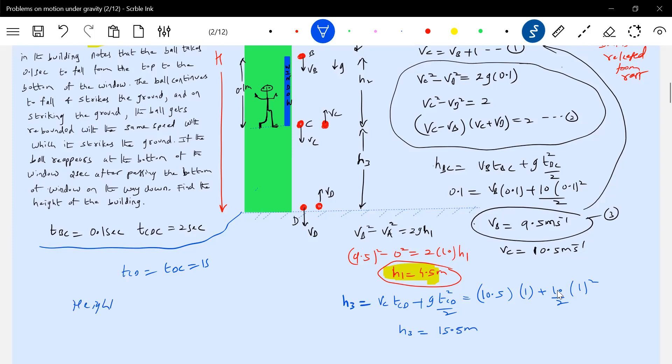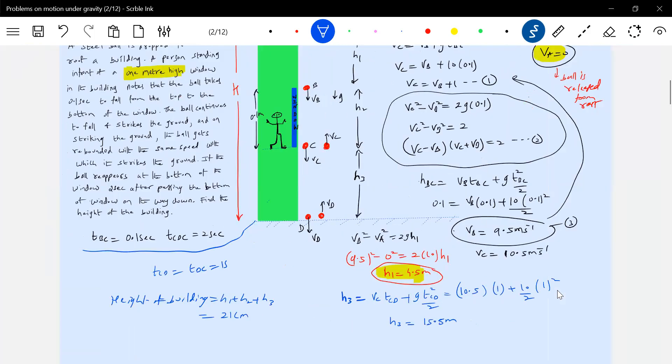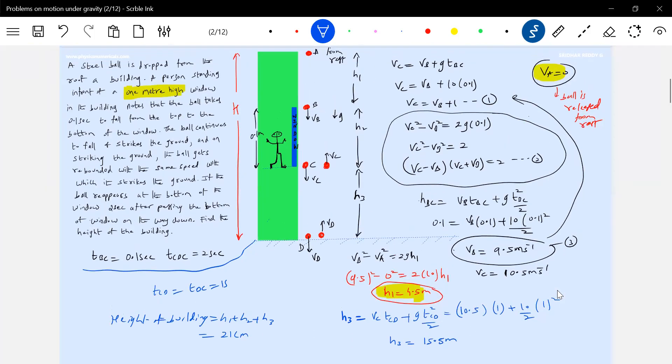The height of the building will be H1 plus H2 plus H3, so adding up all this will get 21 meters. Complete analysis is available, you can see it once. So this will be our answer, this is our final answer.